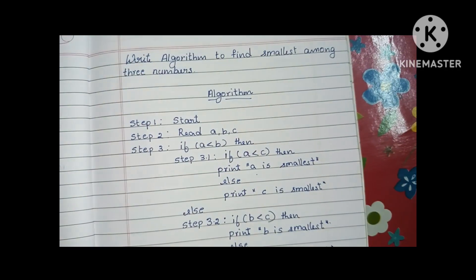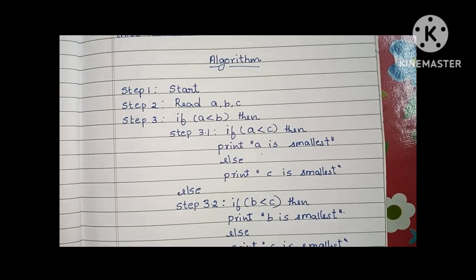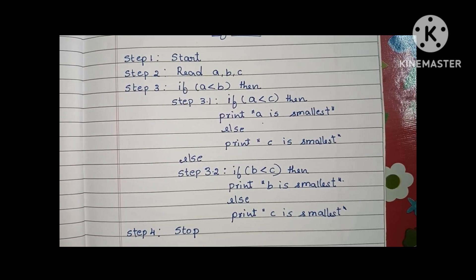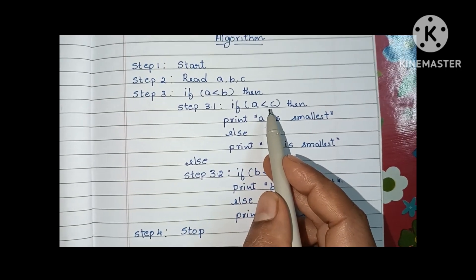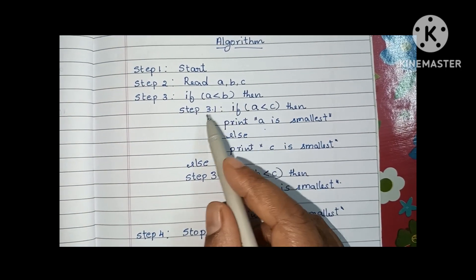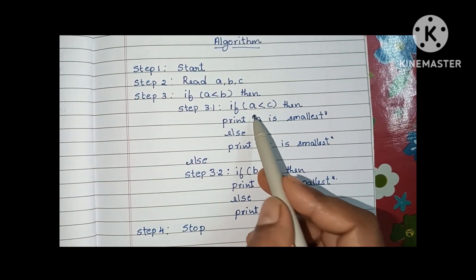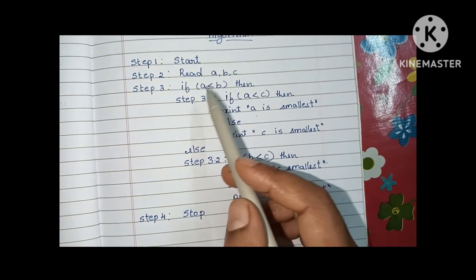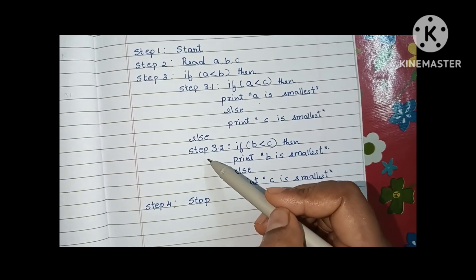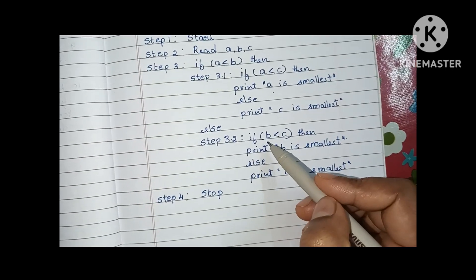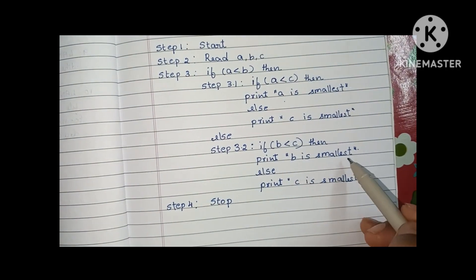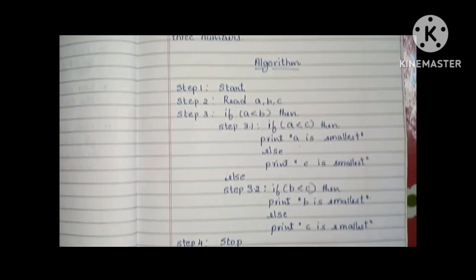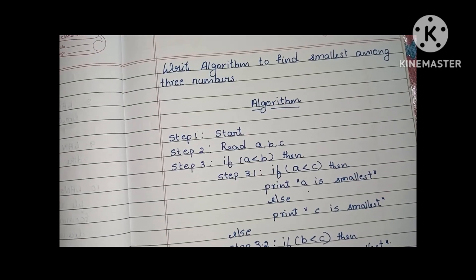This is the algorithm to find the smallest among three numbers. Step one: start. Step two: read three variables a, b, and c. Step three: compare a with b. If true, compare a with c — if true, print 'a is smallest'; else print 'c is smallest.' If a less than b is false, go to step 3.2 and compare b with c — if true, print 'b is smallest'; else print 'c is smallest.' Step four: stop the algorithm using a stop statement.